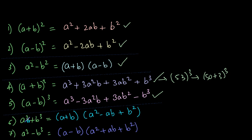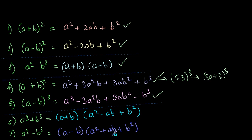The next formula is a cube plus b cube, which equals (a + b) into (a² − ab + b²). Its counterpart is a cube minus b cube, which equals (a − b) into (a² + ab + b²).